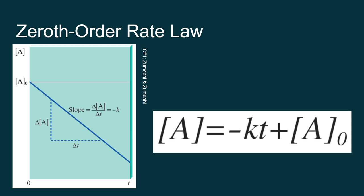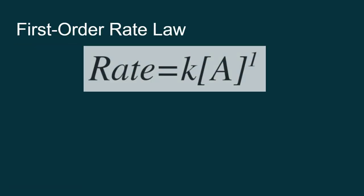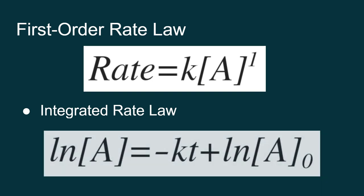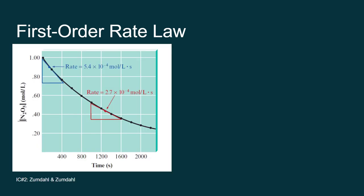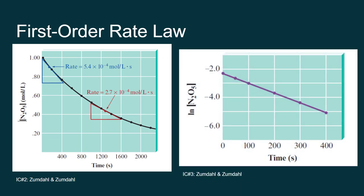As we saw in the last assignment, the equations get more complicated. We can have a first order reactant, where rate equals k times the concentration of A raised to the first power. The integrated rate law for this gives something very different. When expressed as the equation of a line, it looks like: the natural log of the concentration of A equals negative kt plus the natural log of the initial concentration of A. We looked at this example in the last assignment — the decomposition of nitrogen pentoxide does not happen at a constant rate, and for our pre-calc fans, this is exponential decay.